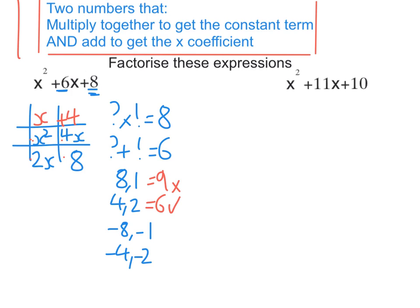Then for the first row we've got x² and 4x, so the common factor is x. And for the last row we've got 2x and 8, and the common factor is 2.